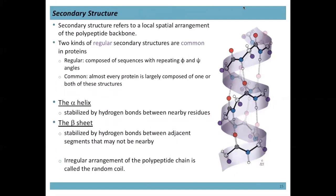The first secondary structure is the alpha helix — named alpha because it was the first secondary structure discovered. Linus Pauling proposed this model, later confirmed by X-ray crystallography. It is a regular secondary structure common in proteins because it is composed of sequences with repeating phi and psi angles. Almost every protein is largely composed of one or both regular secondary structures — the alpha helix and the beta sheet.